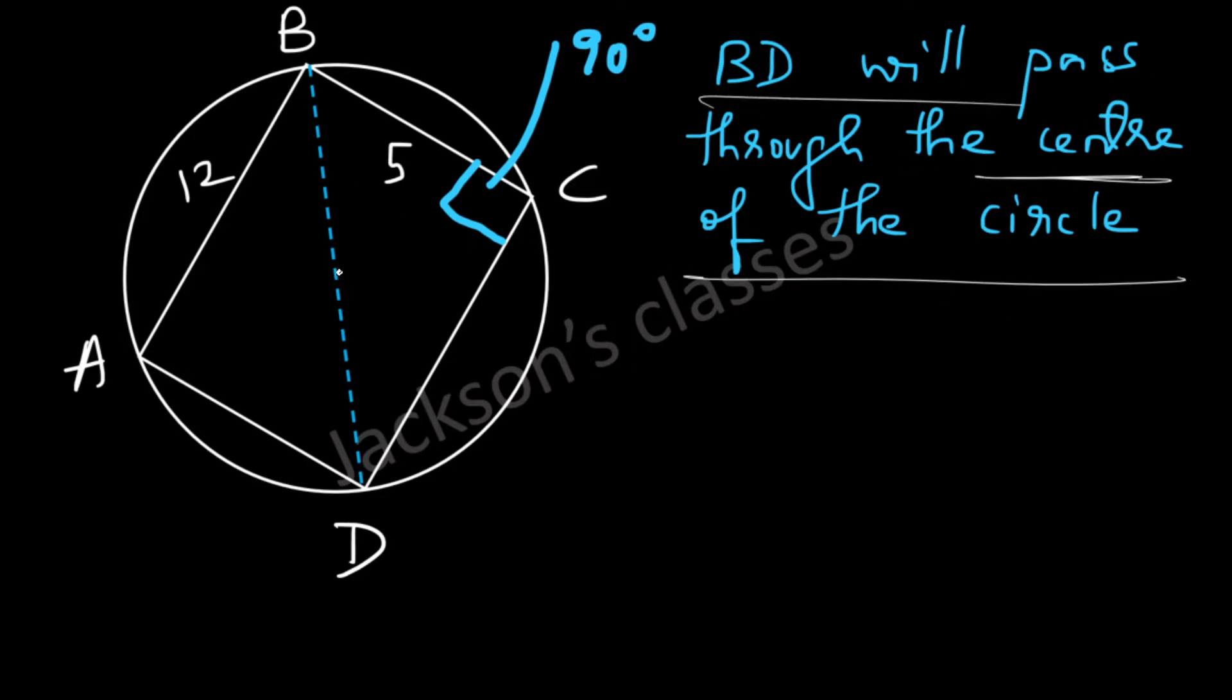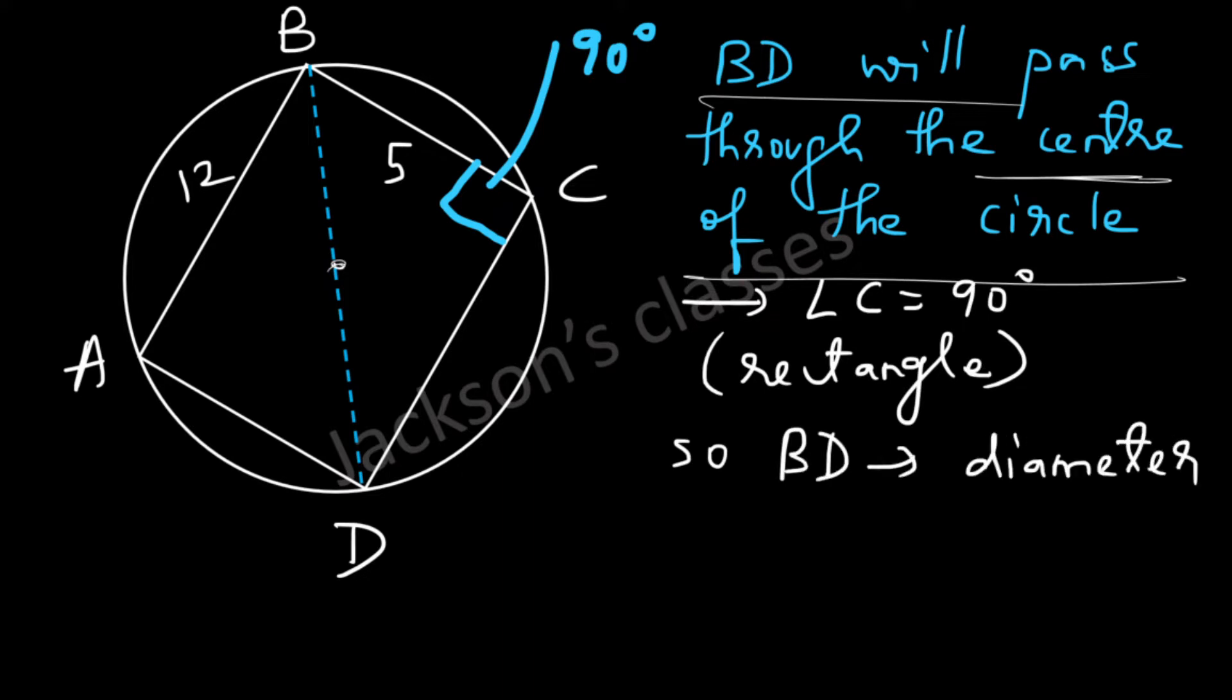Only if BD passes through the center of the circle will BD be the diameter. So this angle over here is 90 degrees and so BD is the diameter. That's what we just now discussed.